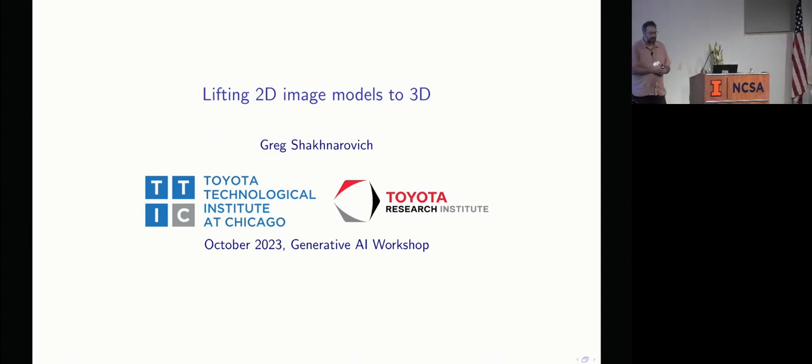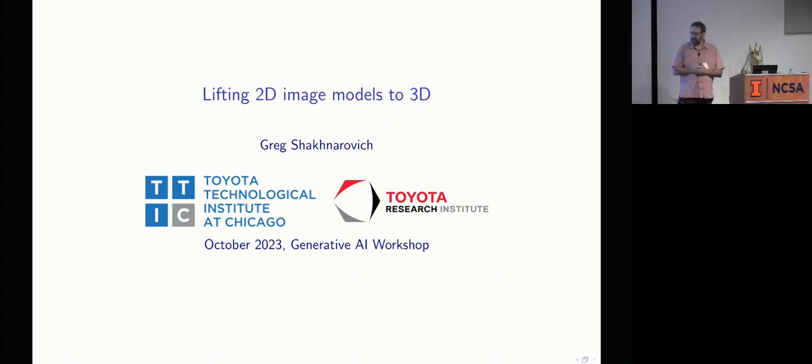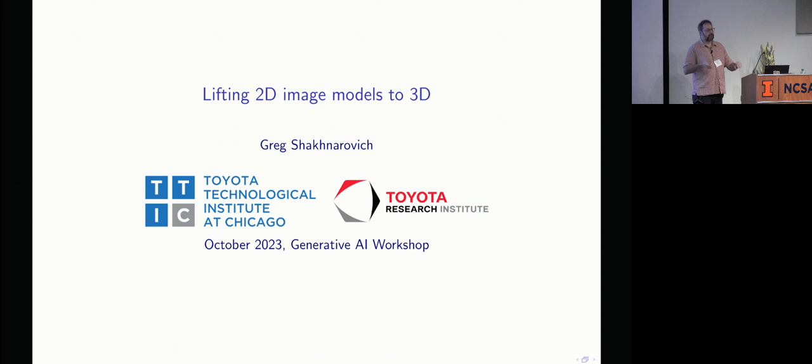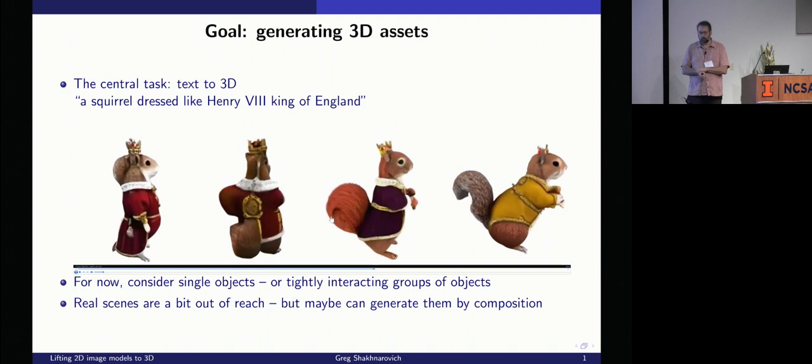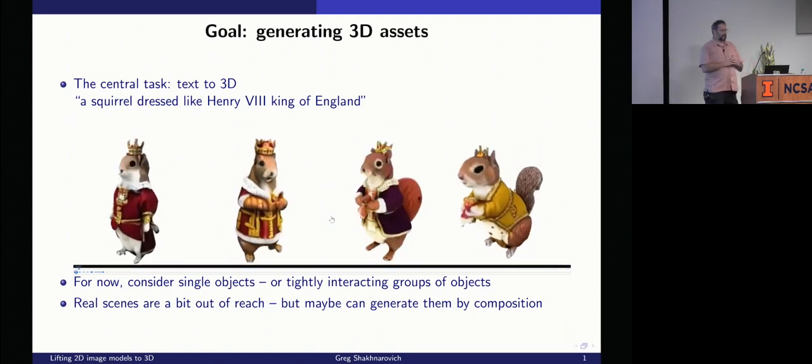Thank you very much. I'm on sabbatical this year at TRI, Toyota Research Institute. Confusingly, despite the name Toyota in both of them, they are completely unrelated to each other. TRI is an actual Toyota research lab where people work on all kinds of things related to machine learning, computer vision, robotics, NLP. I am going to talk about lifting 2D image models to 3D. There has been a lot of talk about what 2D models do to produce images. The task I'm interested here is taking text describing an object of some sort, or a scene, and producing a 3D model of that scene.